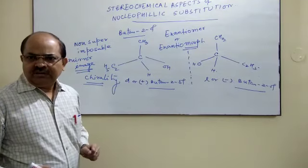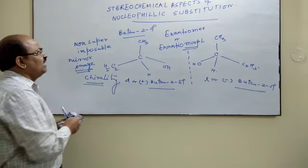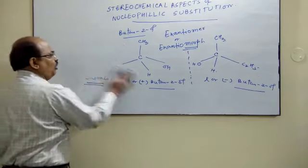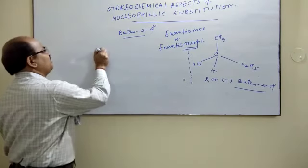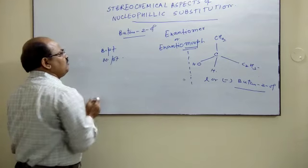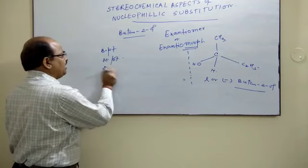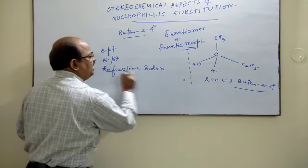So enantiomers, that is D and L, they have the same physical properties like your boiling point, melting point, refractive index, solubility, etc.